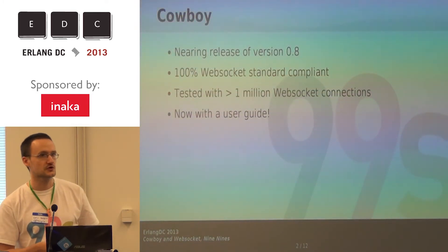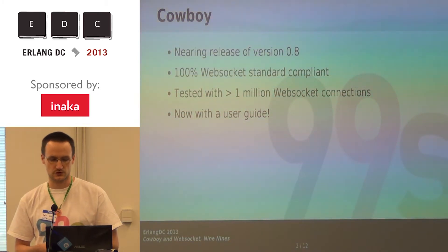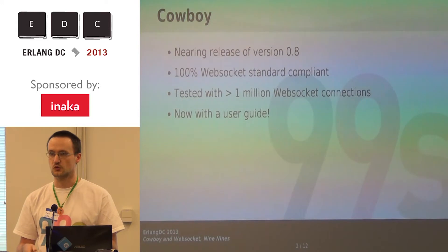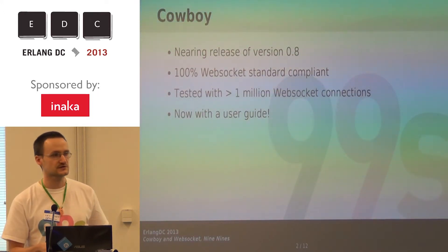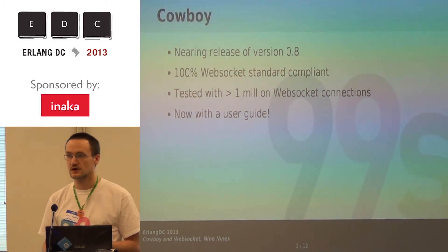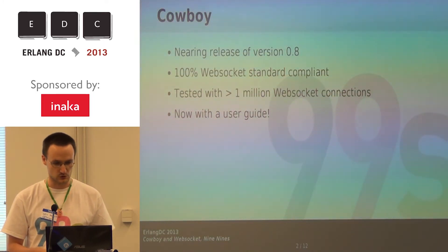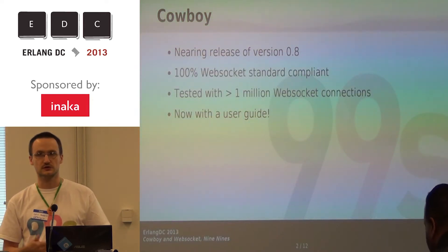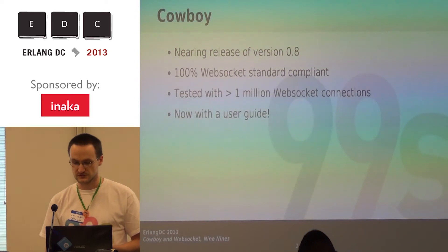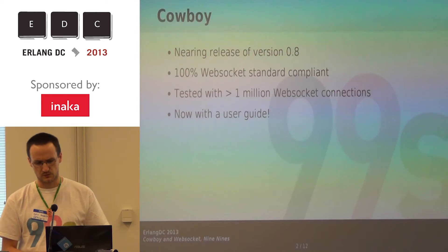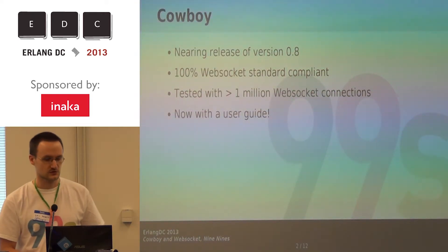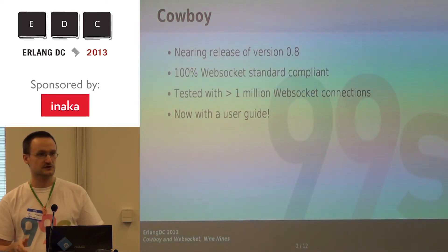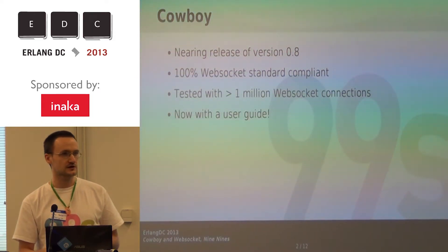Cowboy is quite new — maybe two years old now. It's received a lot of development, including in recent months. It's still a work in progress, but it should be almost ready. On the WebSockets side, it's fully WebSockets standard. WebSockets is now a standard and has an RFC. Cowboy has been tested with one million concurrent connections on a single Amazon EC2 instance. One million connections takes about 25 gigabytes of memory. You can really scale your application if you need it. And Cowboy now has a user guide that is mostly for Erlang developers.